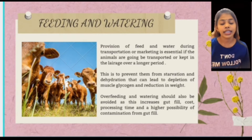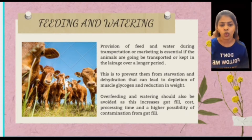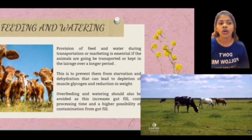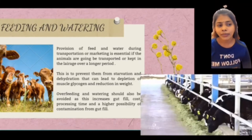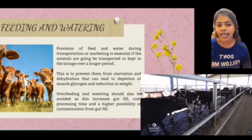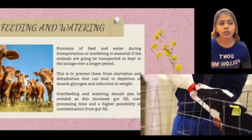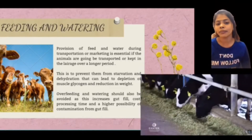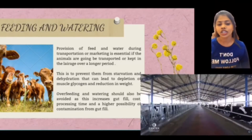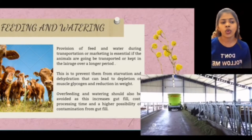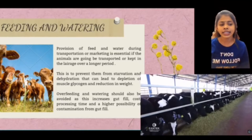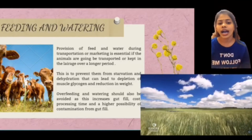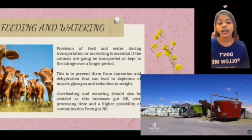The next factor affecting meat quality is feeding and watering. Supervision of feed and water during transportation or marketing is essential if animals are going to be transported or kept in lairage for longer periods. This is to prevent starvation and dehydration, which can lead to depletion of muscle glycogen and reduction in weight. Over-feeding and watering should also be avoided as this increases gut fill, processing time, and the possibility of contamination from gut contents.